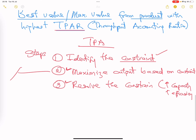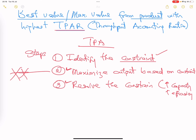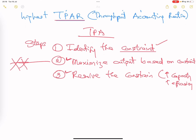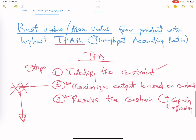Identifying the constraint is straightforward. The real work is here: how do you maximize output based on the constraint? That is what we are talking about, and it is very important.